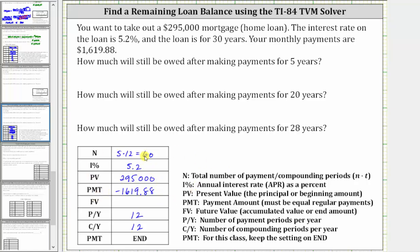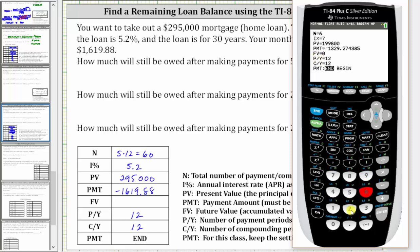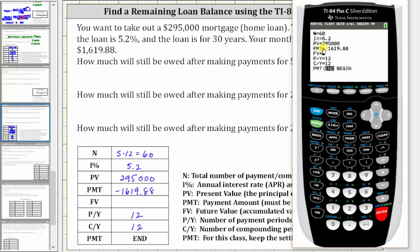Now we open the calculator and enter the information and solve for the future value. From the home screen, we press apps, enter, enter. Capital N is 60, enter. I percent is 5.2, enter. PV, our present value, is 295,000, enter. The payment amount is negative 1,619.88, enter. We are solving for future value, and notice how payments per year and compounds per year are already set on 12, and the payment is set on end. With the cursor on the future value row, we press alpha, enter.